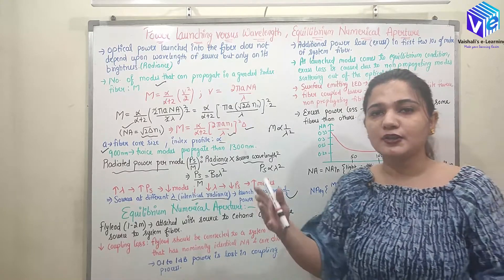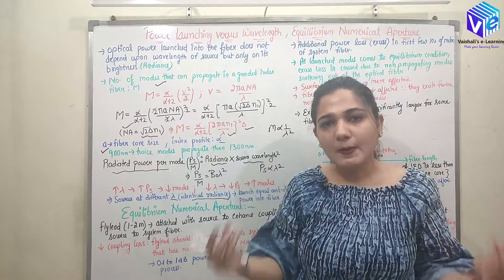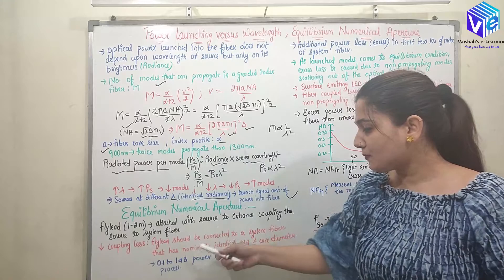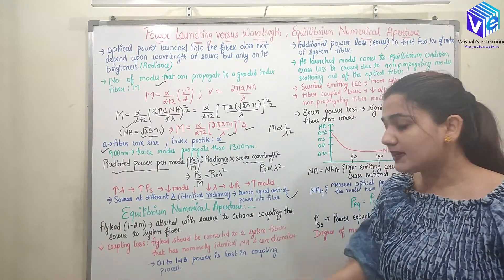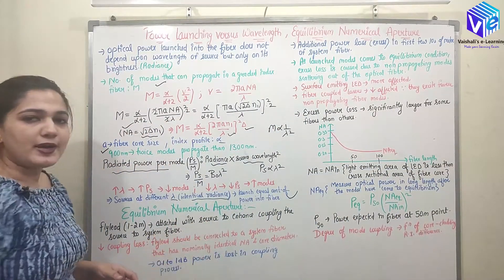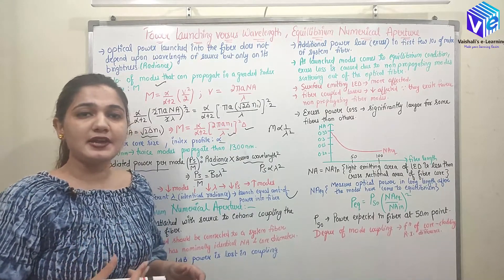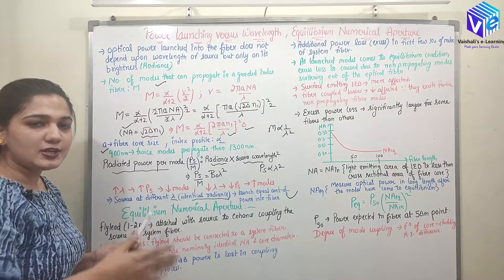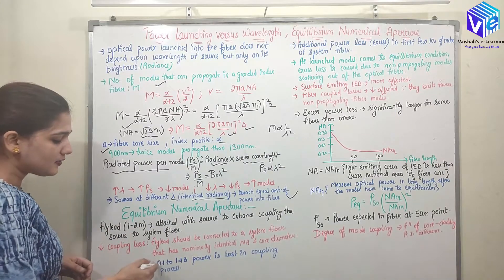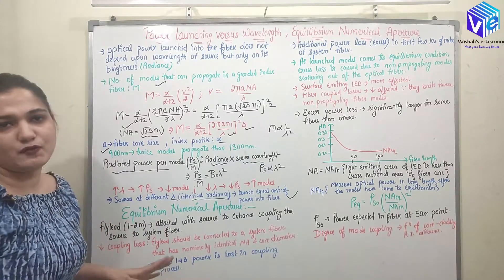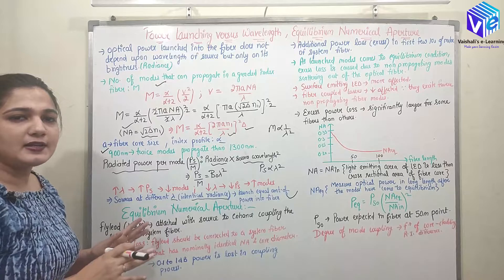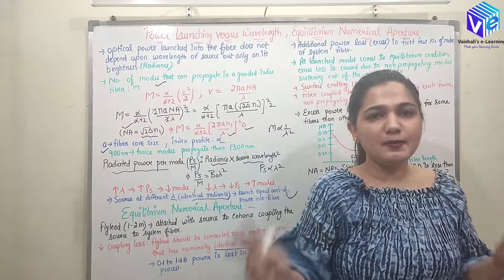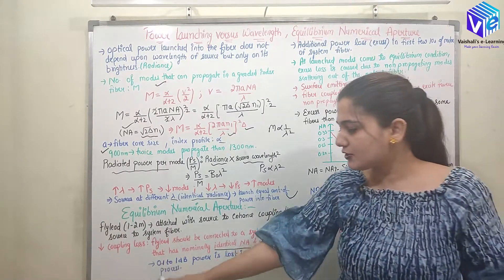We need to couple light from one fiber to another fiber to reduce coupling losses. The fly lead should be connected to a system fiber that has nominally identical numerical aperture and core diameter. If the numerical aperture and core diameter are exactly identical, losses are minimized. When the NA is matched as well as possible, only 0.1 to 1 dB of power is lost in the coupling, which is very small.